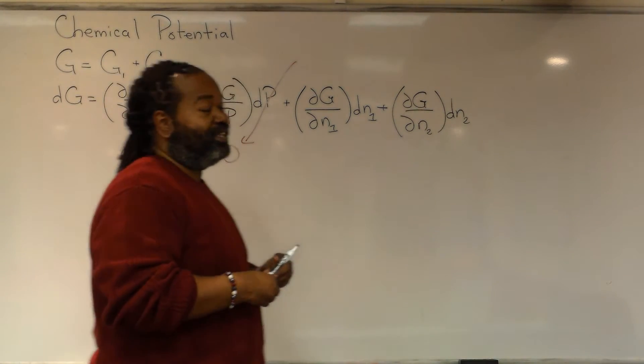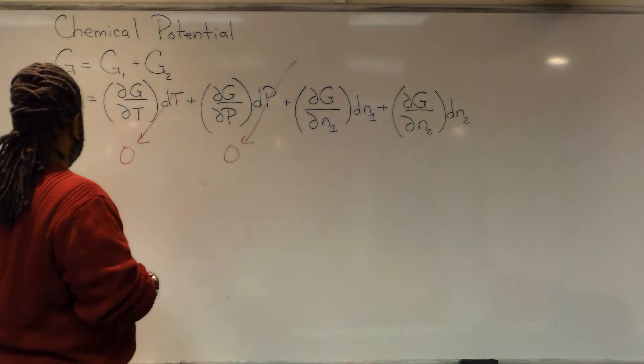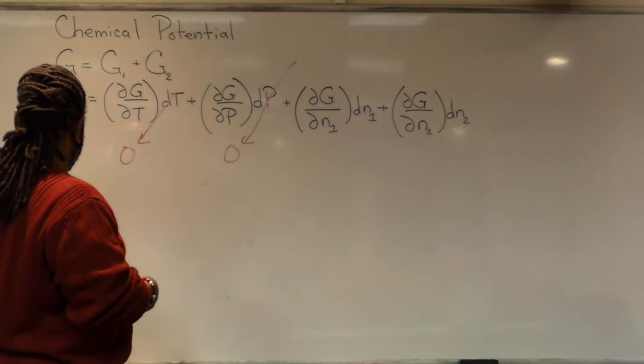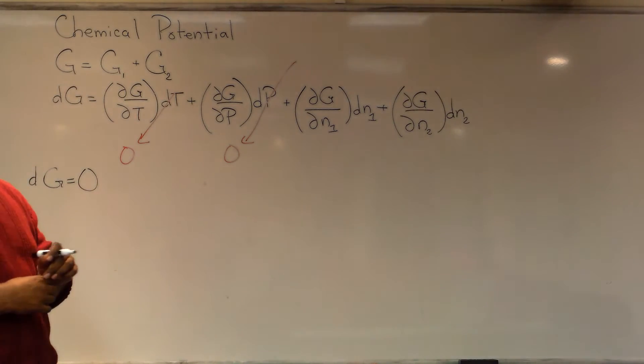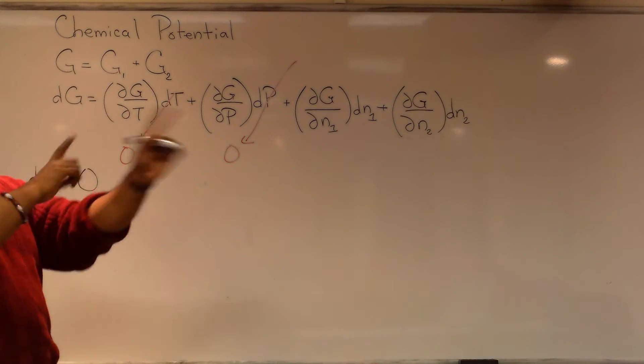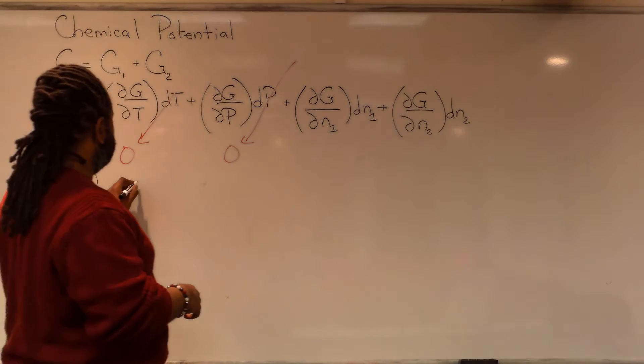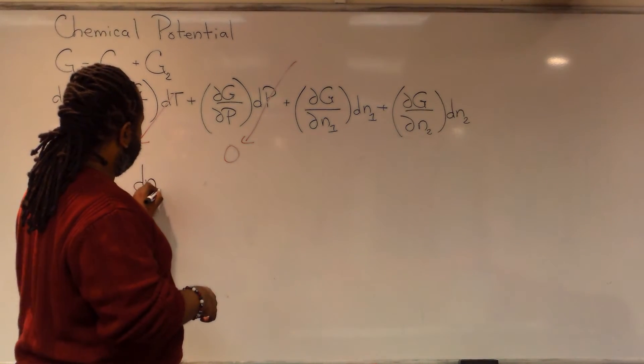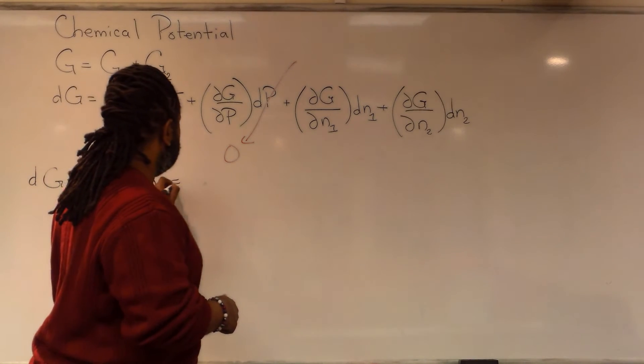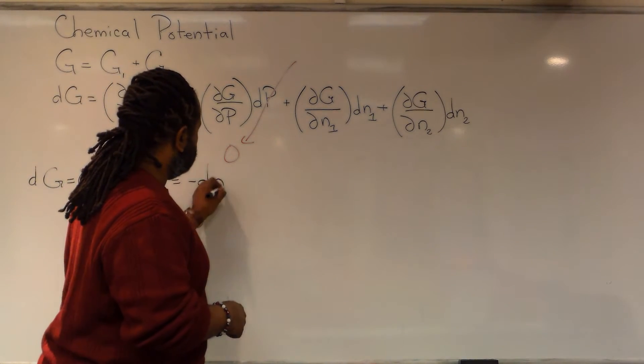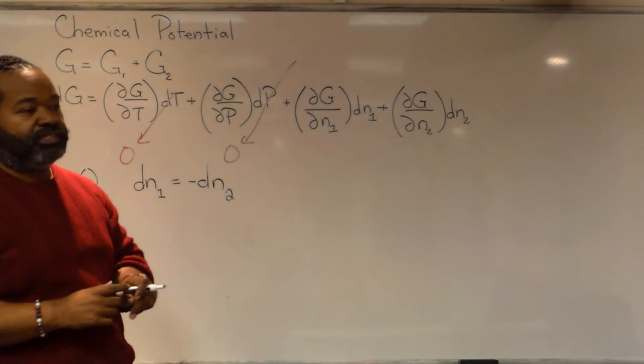one other thing we can do is say that really the change in the Gibbs should be zero. So not only do we have this fact, but since the moles are switching back and forth at an equal rate, whatever the change is from phase one needs to be equal and opposite to whatever the change is from phase two.